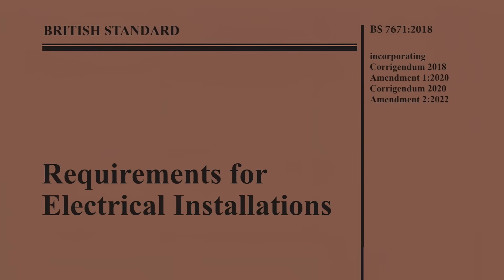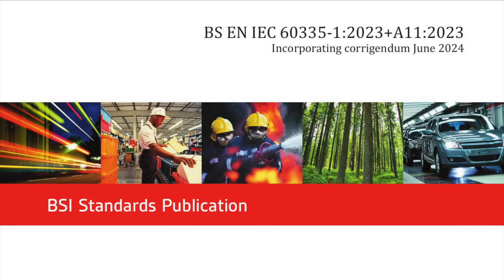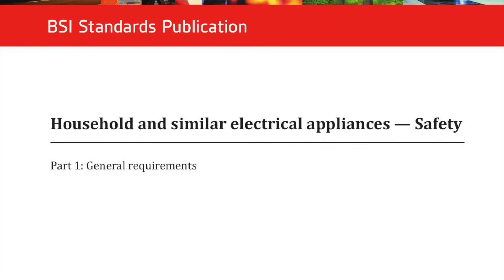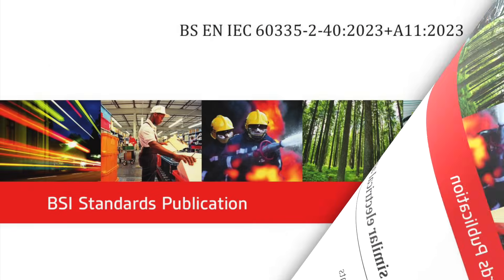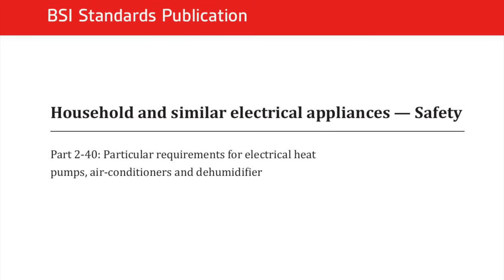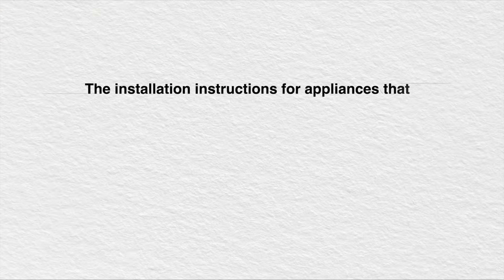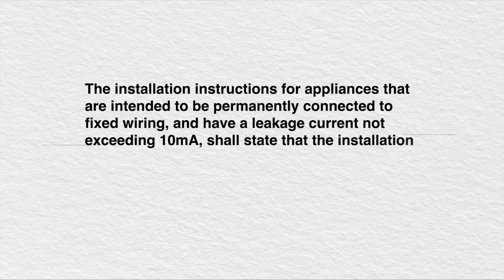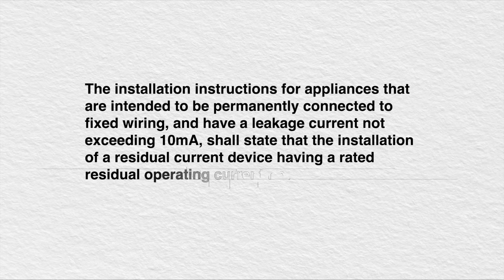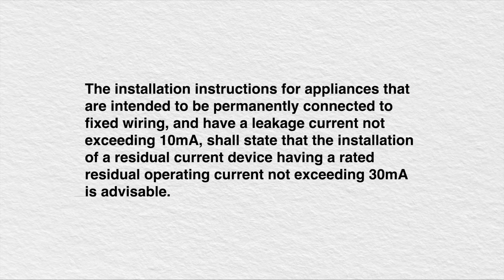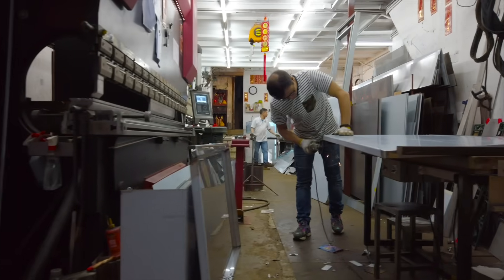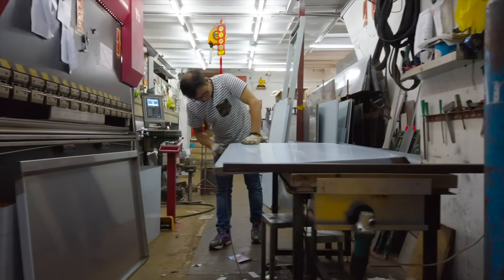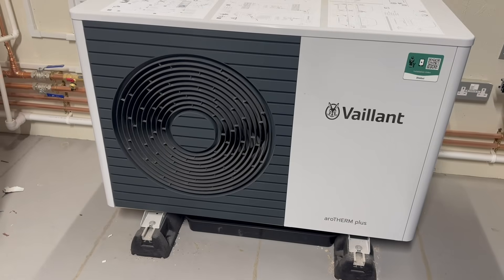But there's more to heat pumps than just BS7671. BSEN IEC 60335 is a safety standard relating to household and similar electrical appliances, and part 2-40 of this document covers specific requirements for heat pumps. Within that document, we find this direction: the installation instructions for appliances that are intended to be permanently connected to fixed wiring and have a leakage current not exceeding 10 milliamps shall state that the installation of a residual current device having a rated residual operating current not exceeding 30 milliamps is advisable. So while this direction is aimed at manufacturers and not electricians, the heat pump makers will want to comply and therefore should recommend in their instructions that an RCD is used to protect the appliance.